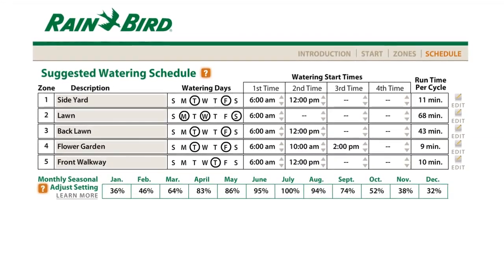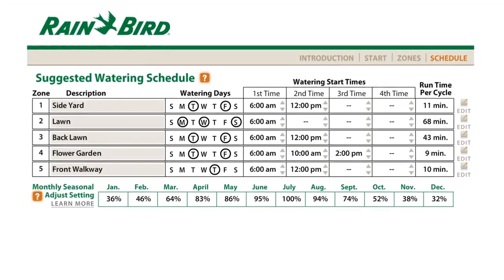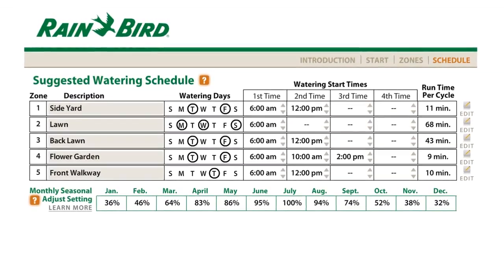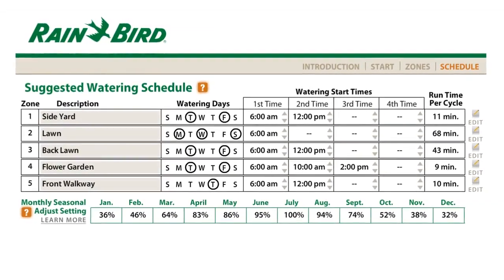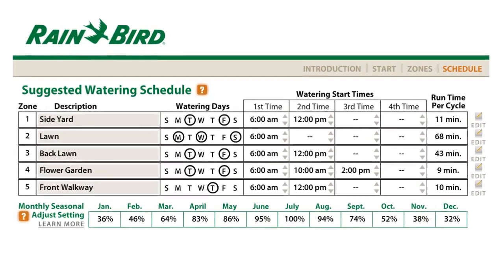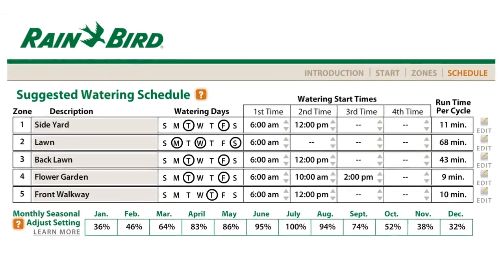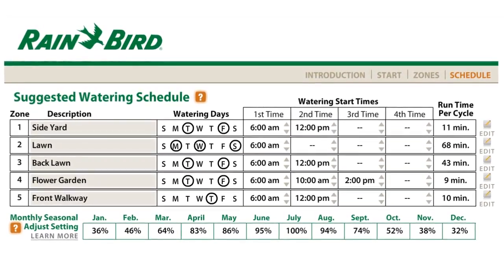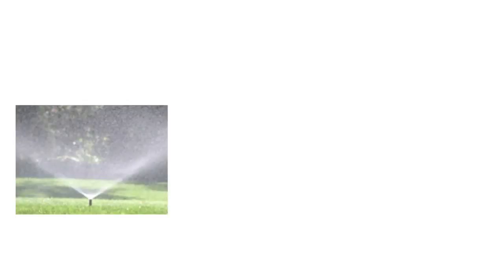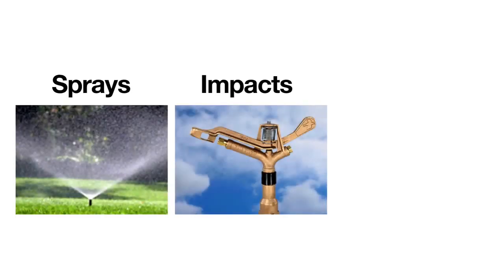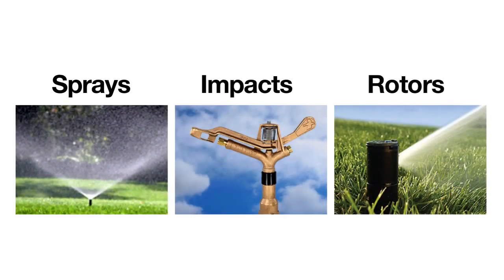In just a few minutes, you'll have a custom-tailored watering schedule for each zone assigned to your controller — a schedule designed to optimize watering times for healthier plants, reduced water usage, and a lower watering bill. By the way, the runtime calculator software works whether your irrigation system uses standard sprays, impacts, or rotors, but it's not for use with drip irrigation.